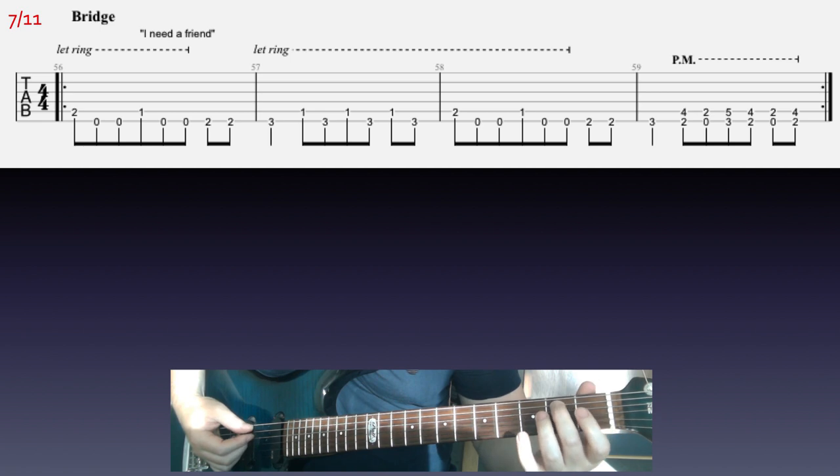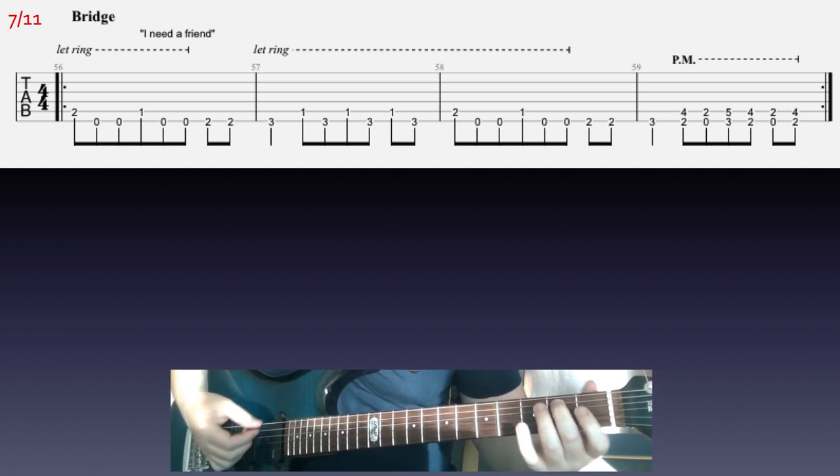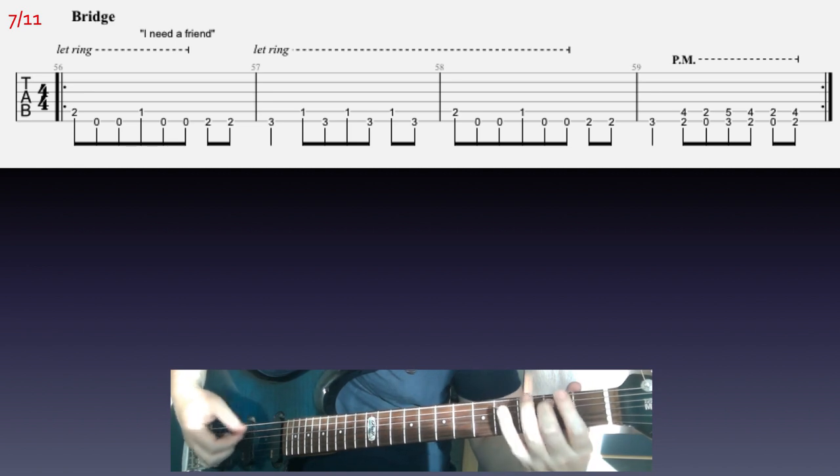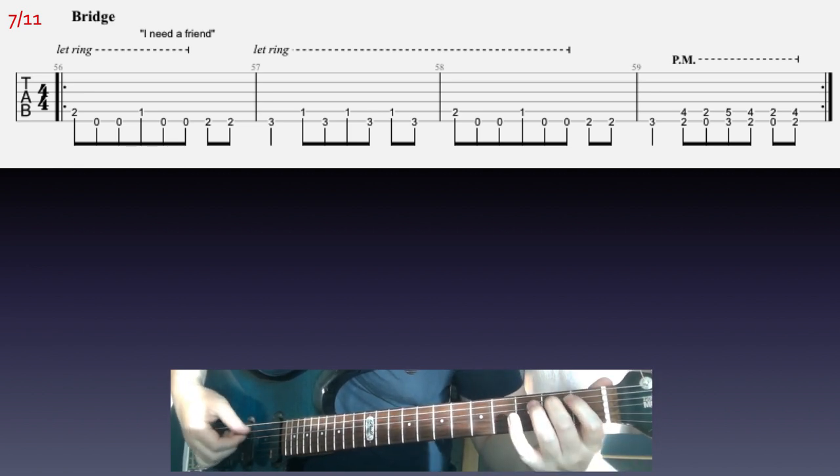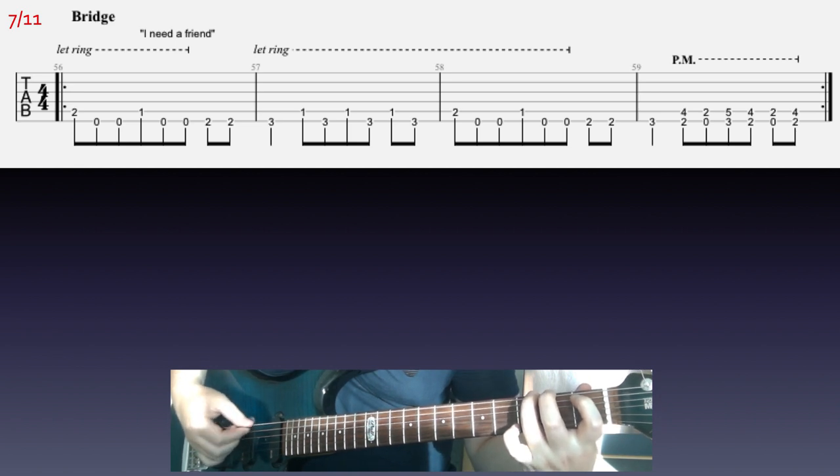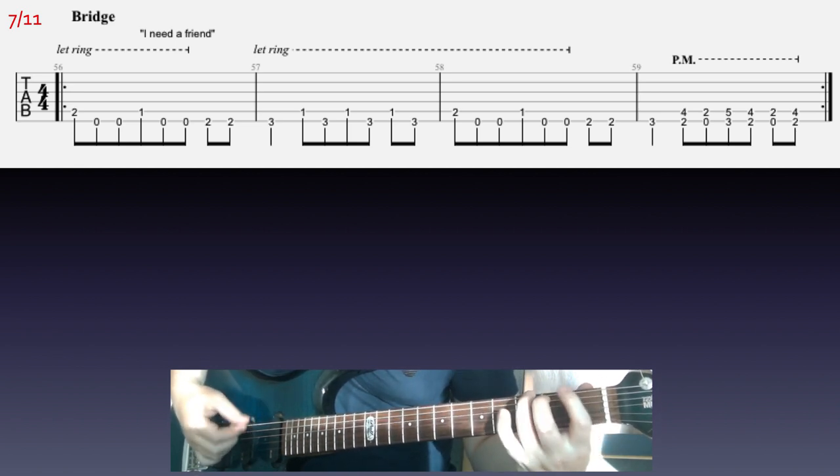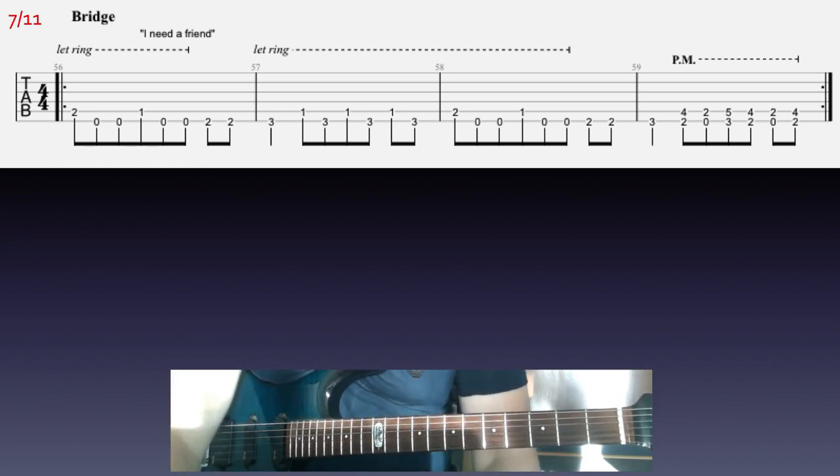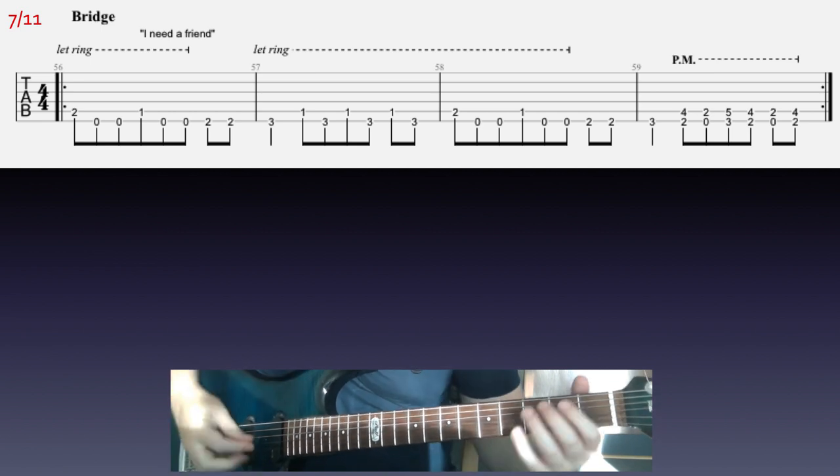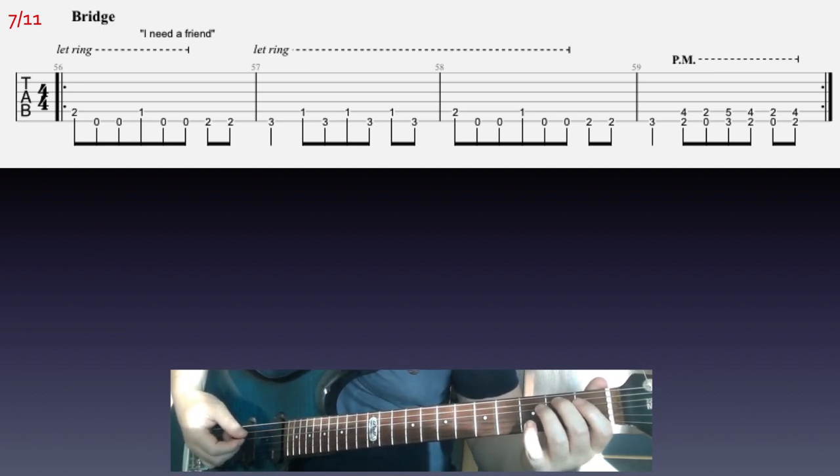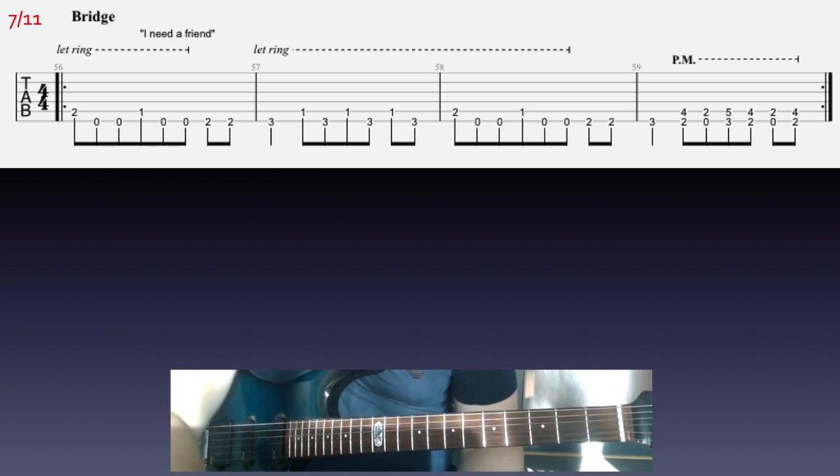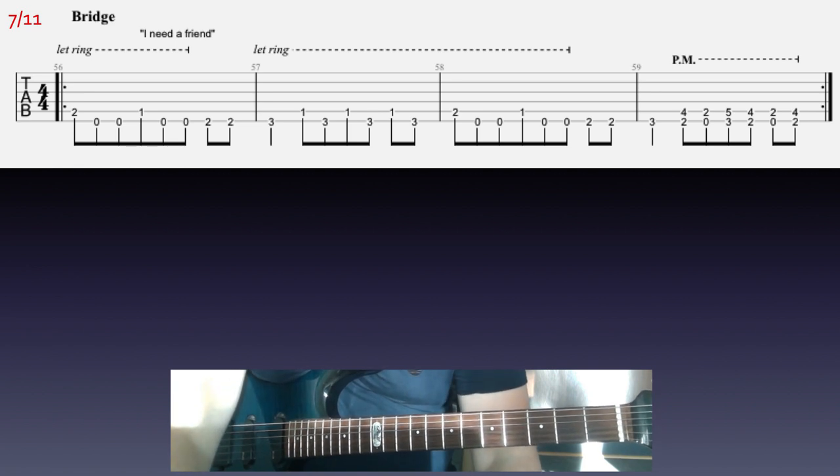Let's continue on. Here we're gonna go to this very kind of sorrowful or gloomy part. You're gonna play it one more time. That would be the bridge. Just make sure to make the notes ring out in the first three bars. Don't mute them.